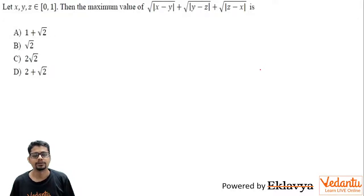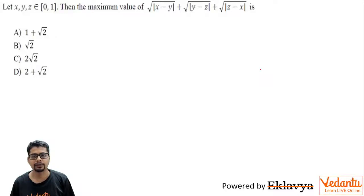The question is: let x, y, z belong to [0, 1]. Then find the maximum value of √|x−y| + √|y−z| + √|z−x|.